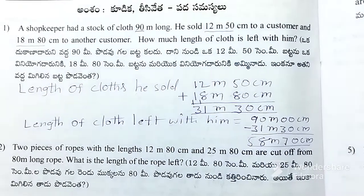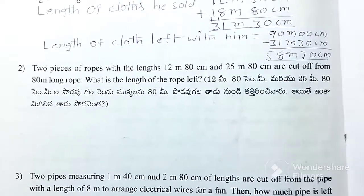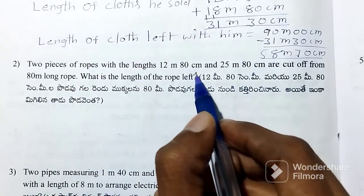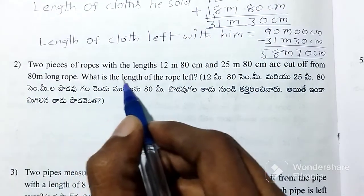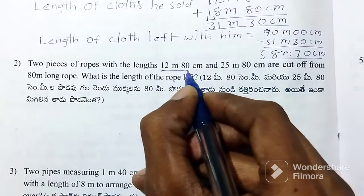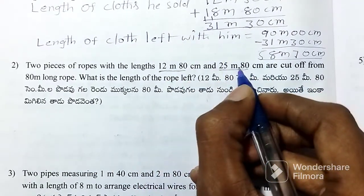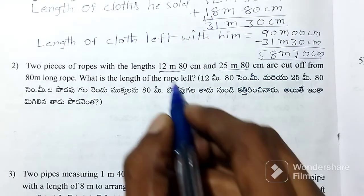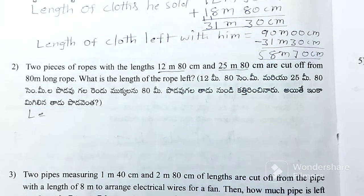The next problem is: two pieces of ropes with lengths 12 meters 80 centimeters and 25 meters 80 centimeters are cut off from an 80 meter long rope. What is the length of the rope left? Now look at the rope and let the ropes start to cut off.